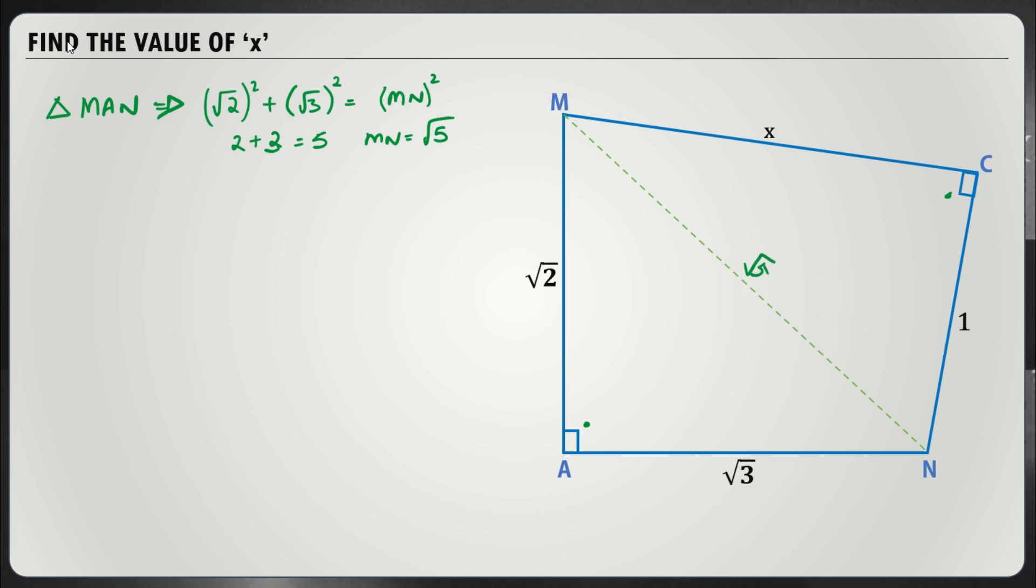Now using this, I now have the hypotenuse and I have one side. I have to find the other side x. That will be easy. Looking at triangle MCN, we know that √5 squared will be equal to 1 squared plus x squared, using Pythagoras theorem.